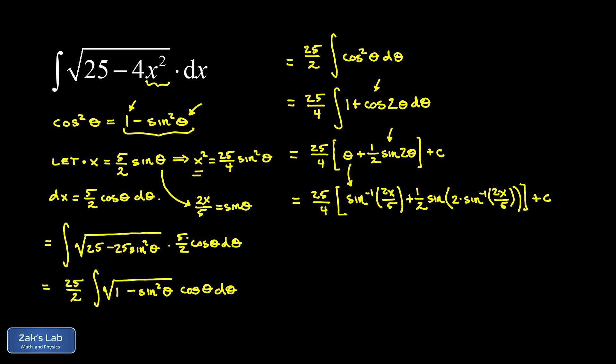In the second term we have the sine of twice the angle whose sine is 2x over 5. While we can compute a trig function of an inverse trig function, we can't directly handle a trig function of twice an inverse trig function. So we back up and apply the double angle identity: sine of 2 theta equals 2 sine theta cosine theta.